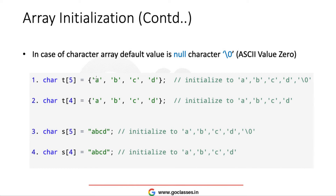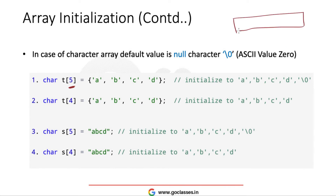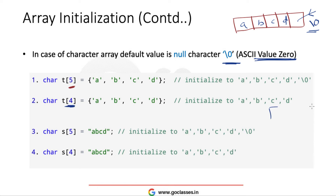Now let's see the similar case with the character array. Character arrays are a bit special. Here I have declared a character array of size 5 and supplied 4 characters. Five character spaces are reserved and the first four blocks are a, b, c, d. The 5th block's default value is the null character, which has ASCII value 0.